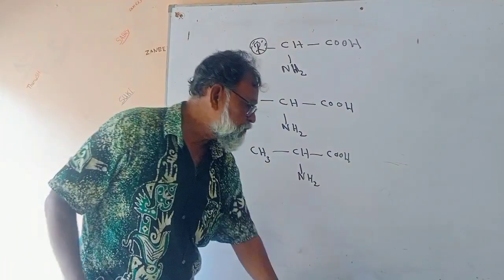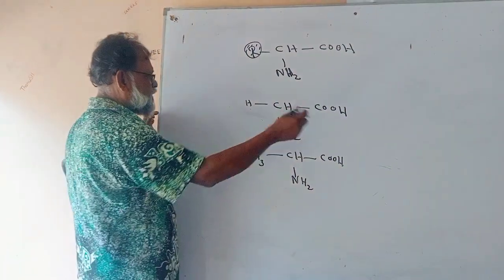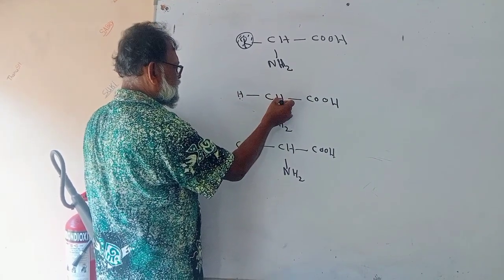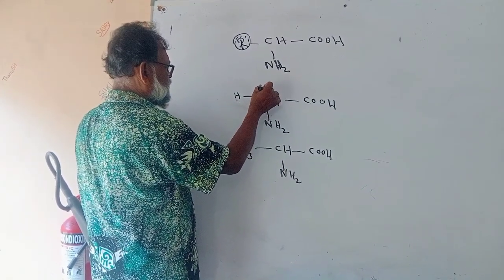This is Glycine, Alanine, Valin, Isoleucine. The carbon is not completely associated with these Glycine.